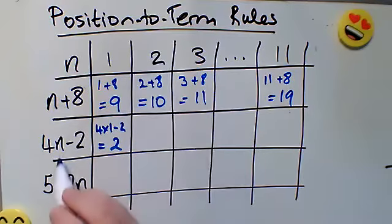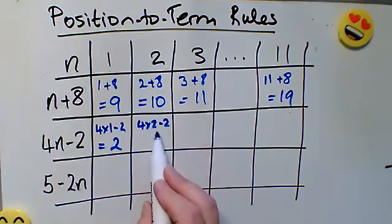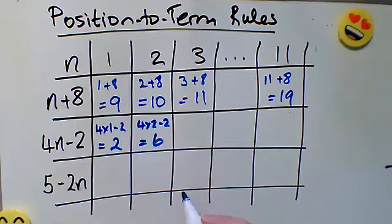The second position, so n becomes 2, 4 times 2 minus 2, so 4 times 2 is 8, minus 2 gives me a second term of 6.